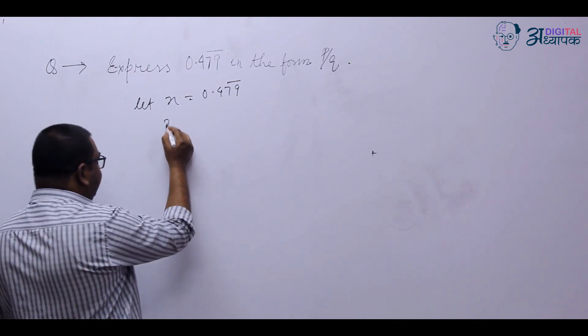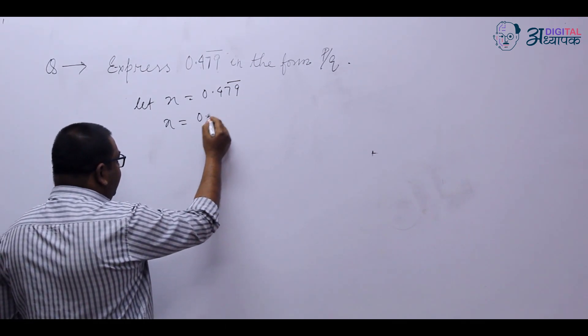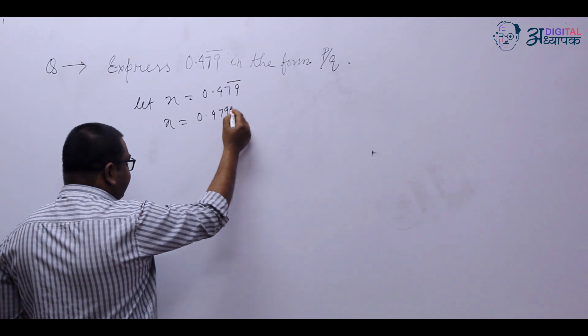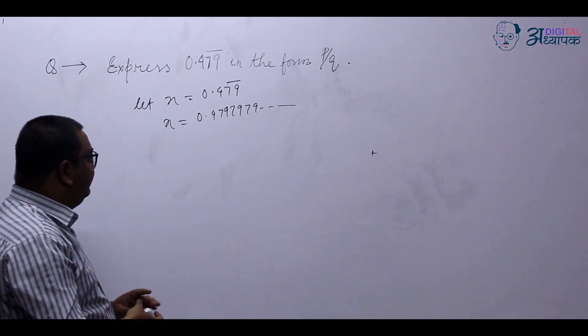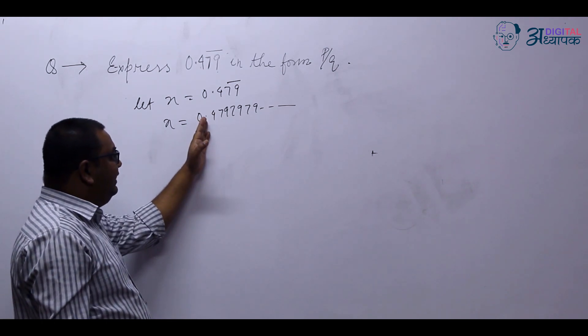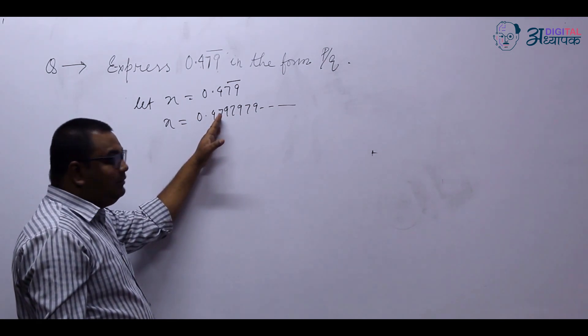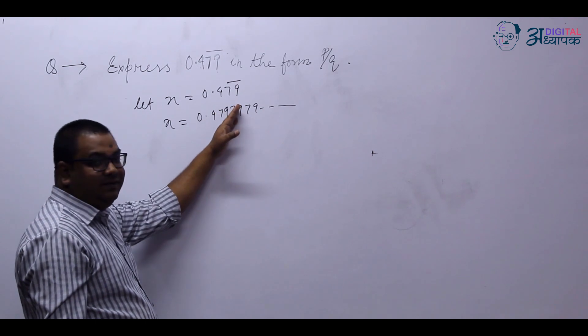So what we will do? We will write the number first. 0.479, 7979 and so on. Now, as I told you previously, first we have to shift the decimal place after 4 and then we have to shift the decimal place after 79.